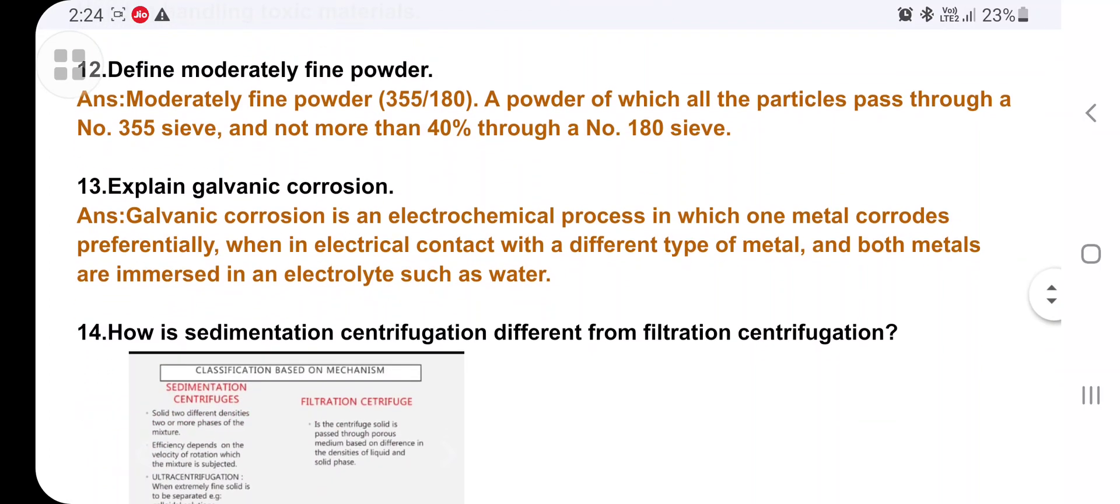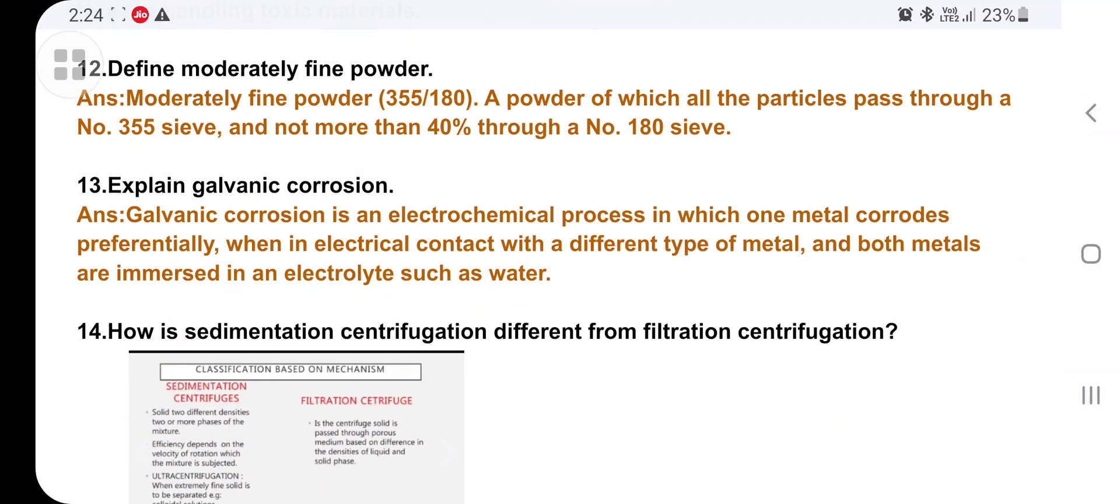Define and explain galvanic corrosion. Galvanic corrosion is a chemical electrochemical process in which one metal corrodes preferentially when in electrical contact with a different type of metal. Both metals are immersed in electrolyte such as water.